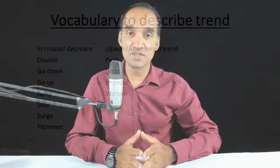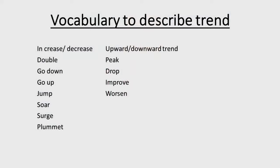Here's the vocabulary for the trends. This vocabulary can be very useful to talk about the changes that occurred in the graph: increase, decrease, double, go down, go up, jump, soar, surge, plummet, upward, downward trend, peak, drop, improve, or worsen, etc.